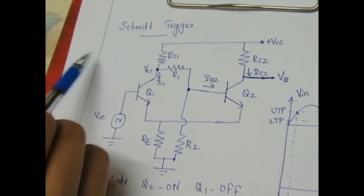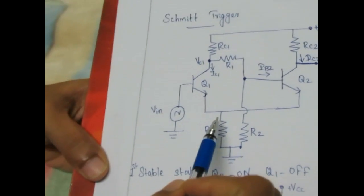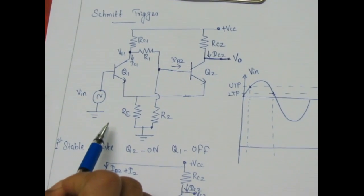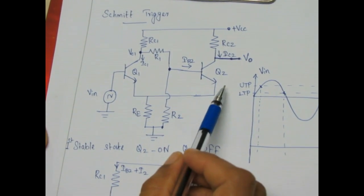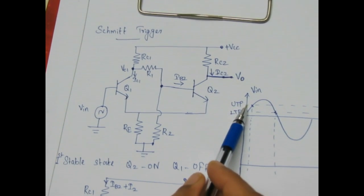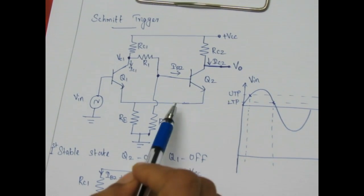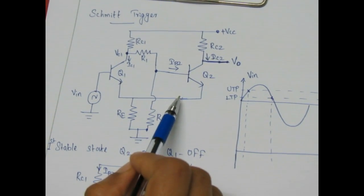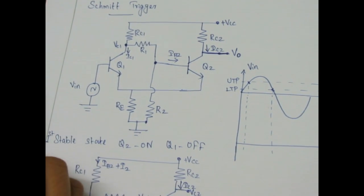The Schmitt trigger circuit is also called an emitter coupled binary. Its working is almost similar to that of a bistable multivibrator. An input sinusoidal signal is given and the output will be a square wave. The upper threshold point and lower threshold point of the input sinusoidal signal will act as true triggering signals for the Schmitt trigger circuit, which will also have two stable states.